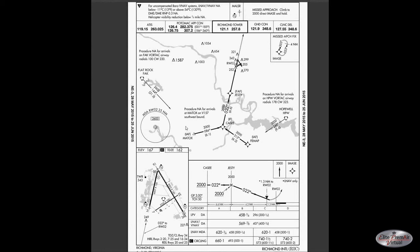Note the minimum altitude of at or above 2,000 feet at CASI. But based on the minimum safe altitude circle within 25 nautical miles of runway 2, you must maintain altitude at or above 2,600 feet until you at least get to one of the initial approach fixes.